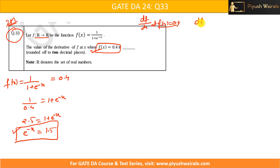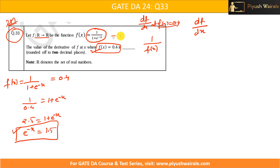Now let's take the derivative. f(x) = 1 / (1 + e^(-x)). We can write this as (1 + e^(-x))^(-1) and apply the chain rule. Alternatively, using the rule that the derivative of 1/f(x) is -f'(x) / [f(x)]^2. Both approaches work.